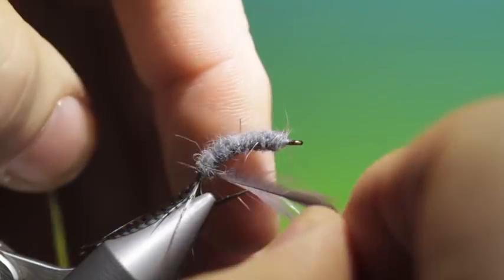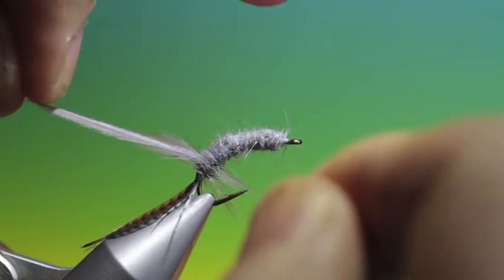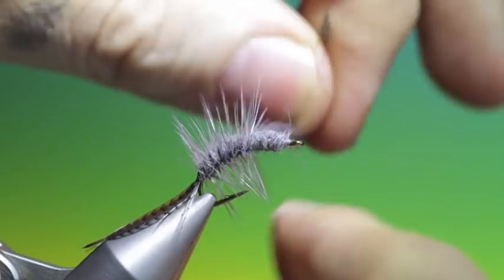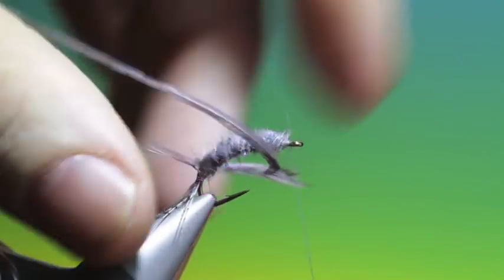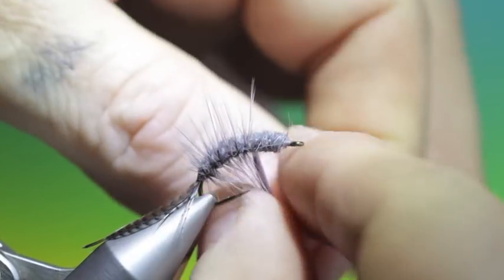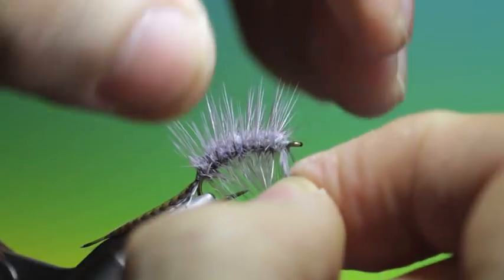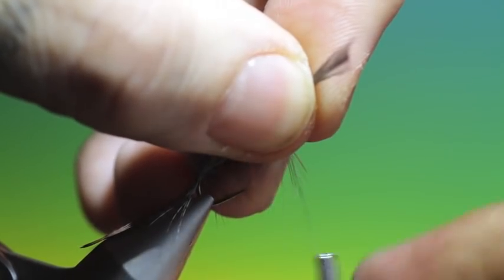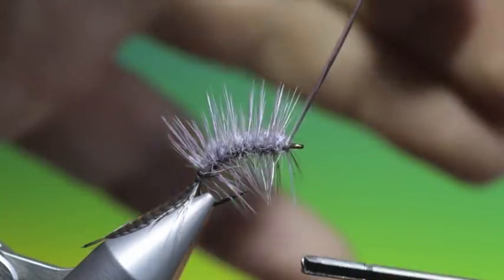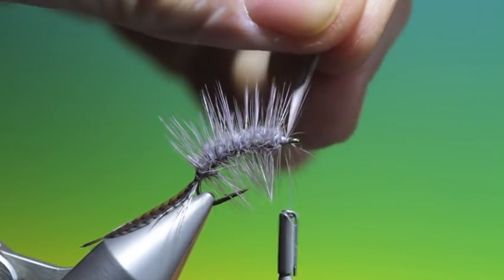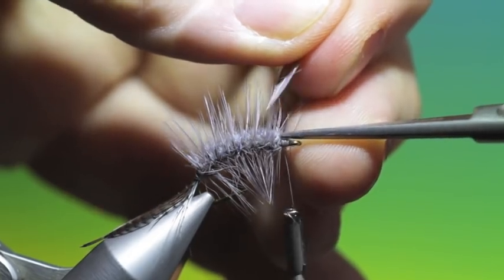Get down to that. Then we take our hackle. Make the legs. You can make these legs as dense as you wish. Get that a spin. Tie off the hackle. Forward. Get rid of that.